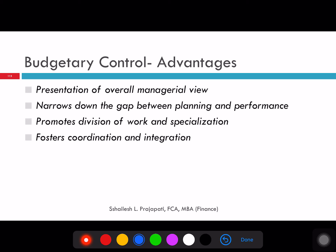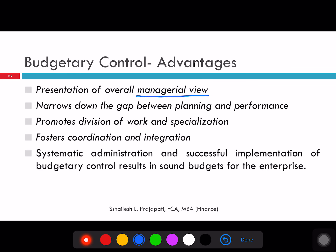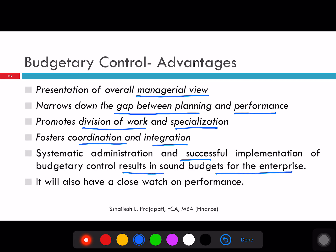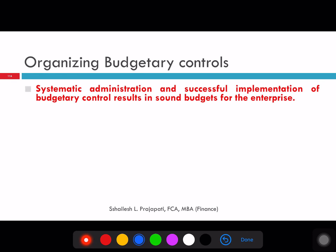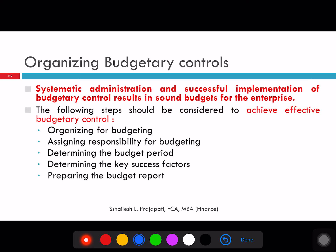Advantages of budgeting include: presentation of an overall managerial view, it narrows down the gap between planning and performance, promotes division of work and specialization, fosters coordination and integration between departments. Systematic administration and successful implementation of controls results in a sound budget for the enterprise and will have a close watch on performance. The following steps should be considered to achieve effective controls: organize the budget, assign responsibility for budgeting, determine the budget period (normally a year), determine key success factors, and prepare the budget report — which may be monthly, quarterly, or yearly.